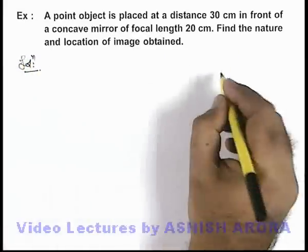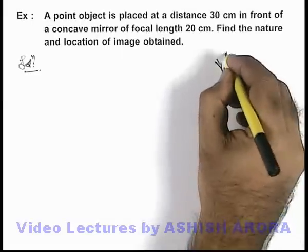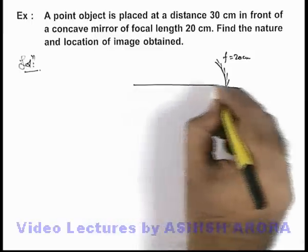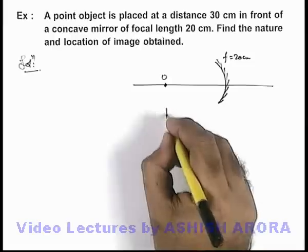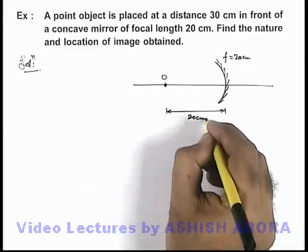In this situation, this is the concave mirror used, which has a focal length 20 centimeter. On its principal axis, a point object is placed at a distance of 20 centimeter from its pole.